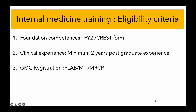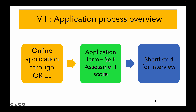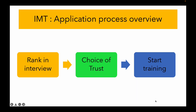The third and most important criteria is GMC registration, which you can obtain through PLAB, an MTI post, or MRCP. Once you are confident you fulfill the eligibility criteria, you apply through an online portal called Oriel. You fill out an extensive application form detailing your work experience and commitment to internal medicine training, and give yourself a self-assessed score. Panelists review your application and, if satisfied, shortlist you for interview. Your application and interview scores determine a rank, allowing you to choose your trust and begin training.